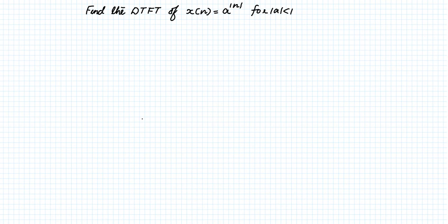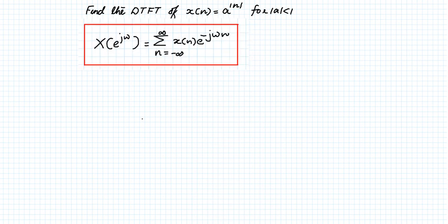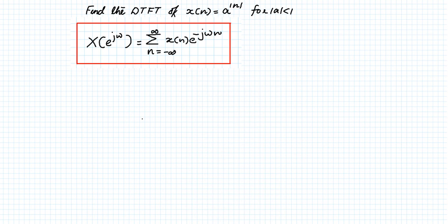In this lecture we will discuss how to find the DTFT of the signal x[n] = a^|n|, with the condition that |a| < 1. This is a basic question but we need to take care of some points. The formula for calculating the Fourier transform of a discrete time signal is: x(e^jω) = Σ from n=−∞ to ∞ of x[n]·e^(−jωn), and in place of x[n] we substitute a^|n|.